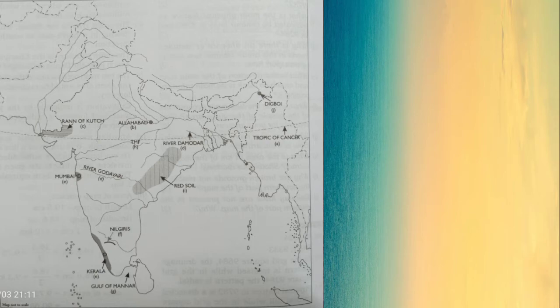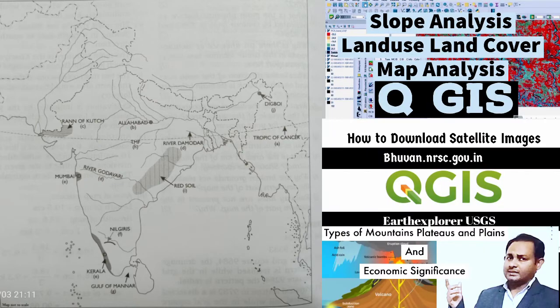Next map: mark and name the latitude that divides the subcontinent into two zones — the Tropic of Cancer. 'B' — the city at the confluence of river Ganga and Yamuna. 'C' — the Rann of Kutch. 'D' — the river Damodar and river Godavari.